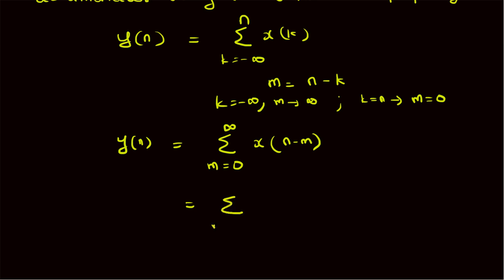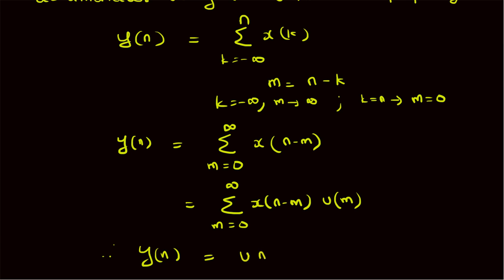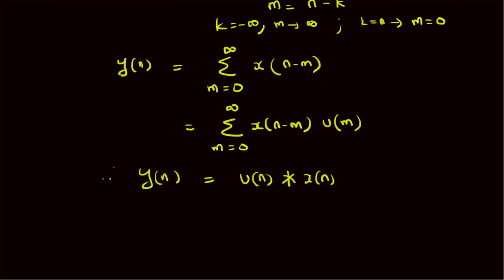It can be written as summation m = 0 to infinity of x(n - m) * u(m), since u(m) is 1 for values of m from 0 to infinity, so these two sums are identical. This summation looks like a convolution operation, so y(n) is basically the convolution between u(n) and x(n), because the definition of convolution is this summation: u(m) * x(n - m) with summation from m = 0 to infinity.